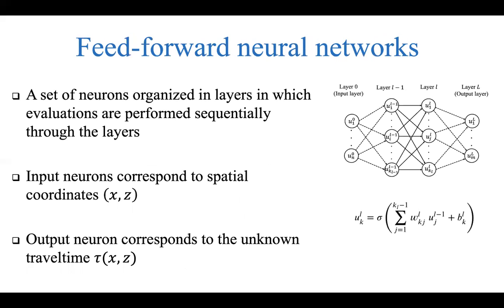The second thing we need is a feedforward neural network, which is a set of neurons organized in layers in which evaluations are performed sequentially. Essentially, we need a neural network with two inputs for a 2D medium—one for each spatial coordinate x and z. For a 3D medium, we'd have three input coordinates. We have one output neuron for the unknown travel time τ. We feed the coordinates to the neural network and it spits out τ. We have a bunch of hidden layers as well, which is problem dependent and will depend on how complicated the function τ is.